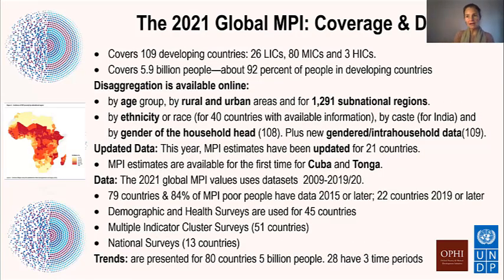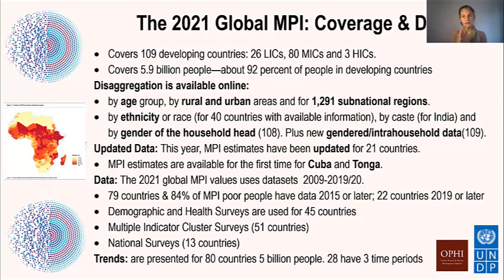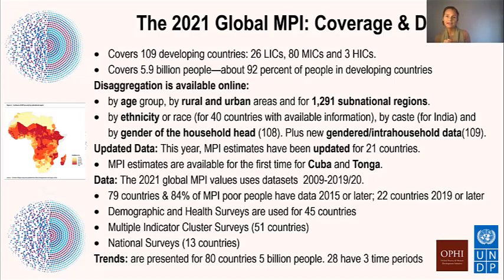The global MPI uses these same three dimensions and 10 indicators to develop a comparable multidimensional poverty measure. In 2021, it covered 109 countries — 26 low income, 18 middle income, and three high income countries — which were home to 5.9 billion people and 92% of people living in developing countries.